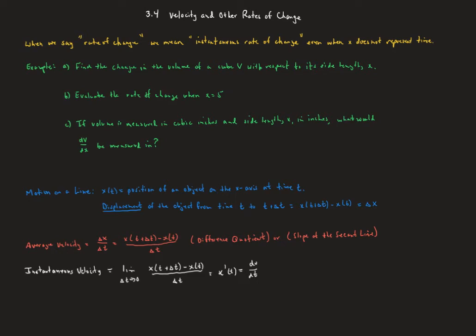In 3.4, we're going to review the ideas of velocity and other rates of change. Hopefully most of this stuff is very familiar. We may use a little bit different notation on some of it, but hopefully it won't stump you. So when we say rate of change, we really mean the instantaneous rate of change, even if we don't say the word instantaneous.